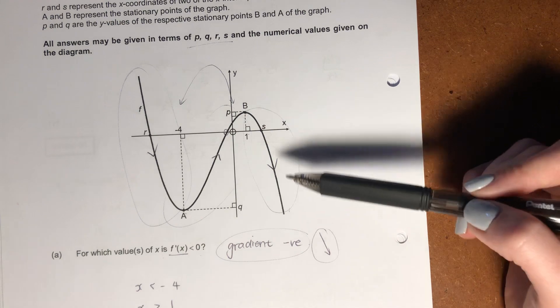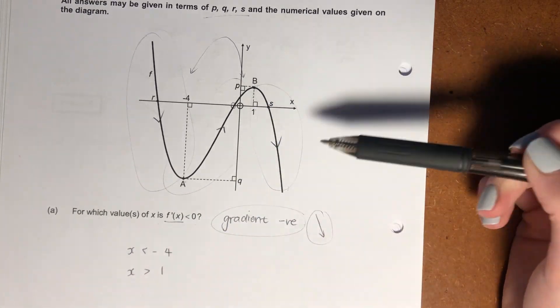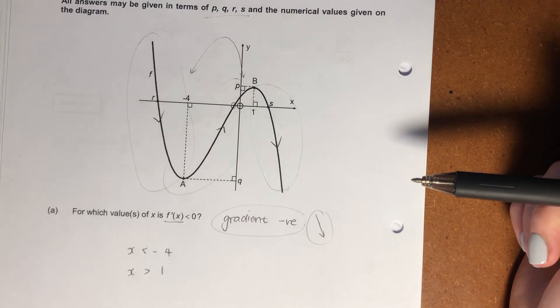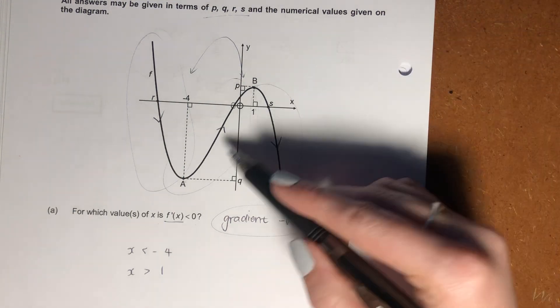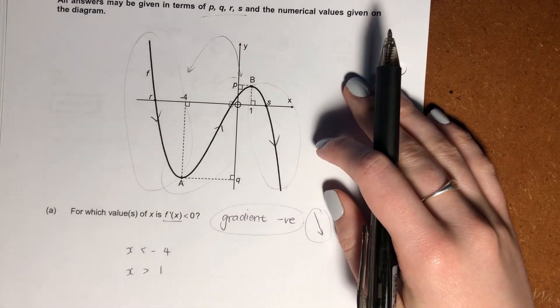So it's anything less than negative 4. Over here, it's anything greater than 1. So those are our two places where our derivative is less than 0, being negative. In between negative 4 and 1, we have a positive gradient.